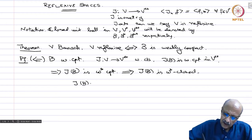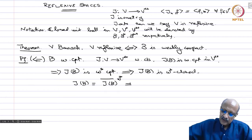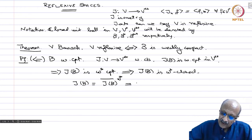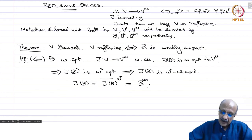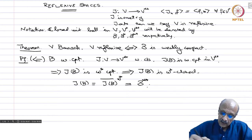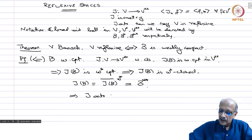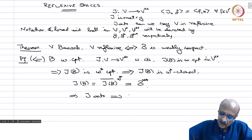Since the weak-star topology is Hausdorff, compact sets in a Hausdorff space are closed, so JB is weak-star closed. Therefore JB equals B double star. So J is onto the unit ball to the unit ball, and therefore onto from V to V double star. This implies V is reflexive.